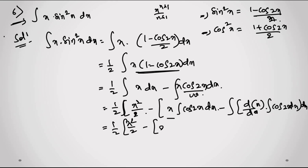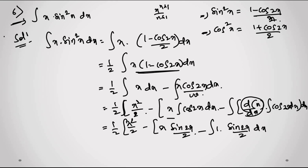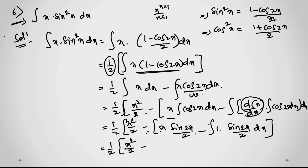Continuing: integral of sin(2x)/2 dx = −cos(2x)/4. So the IBP part gives: x·sin(2x)/2 + cos(2x)/4. Putting it together inside the (1/2): (1/2)·[x²/2 − x·sin(2x)/2 − cos(2x)/4].